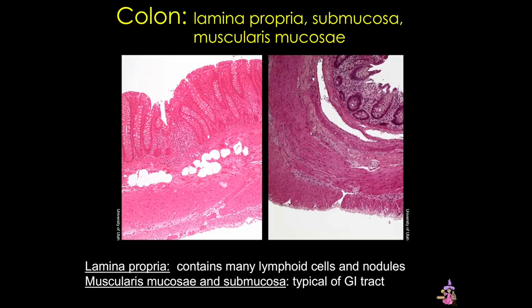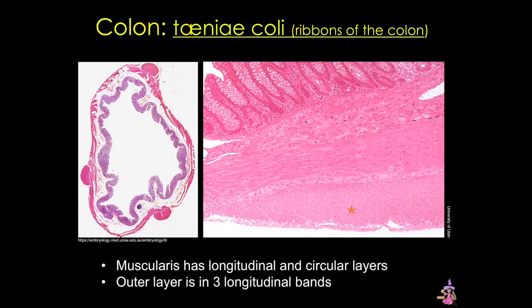In contrast, the muscularis externa of the colon is unusual. The outer longitudinal layer of smooth muscle is not of uniform thickness. The fibers of this layer have gathered into three separate longitudinal bands called teniae coli, or ribbons of the colon. These are under constant tonus, and they produce the haustra — those characteristic puckers or sacculations in the colon wall.